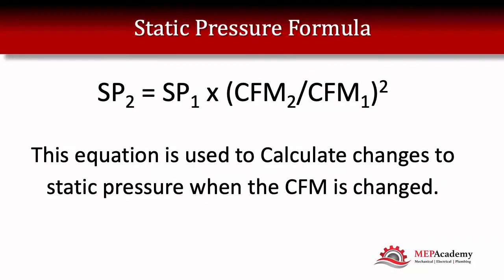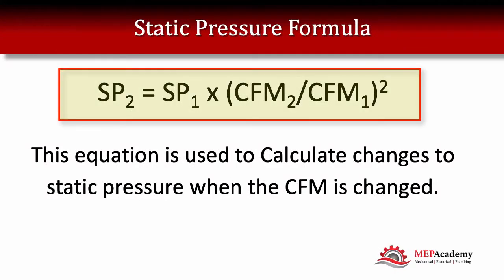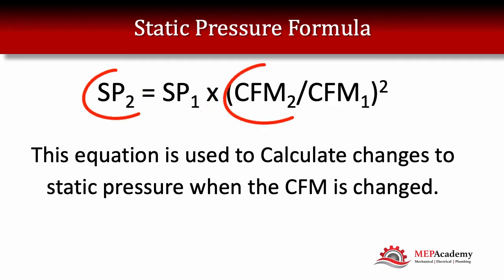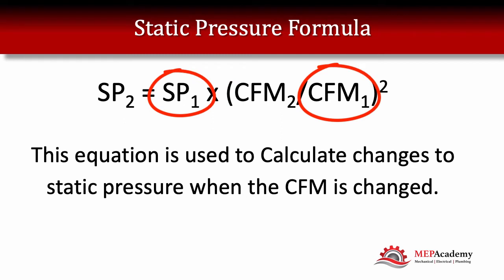This equation is used to calculate changes to static pressure when you change the CFM — the cubic feet per minute, the volume of air going through the duct. Static pressure 2 is the new condition and static pressure 1 is the existing condition.